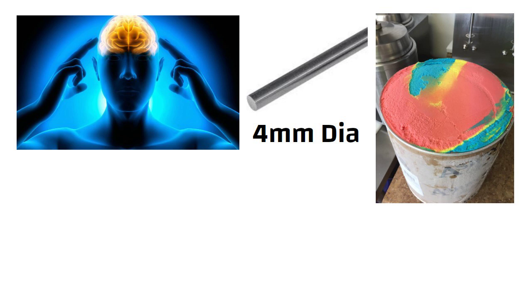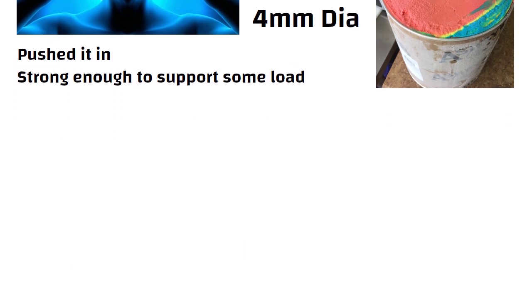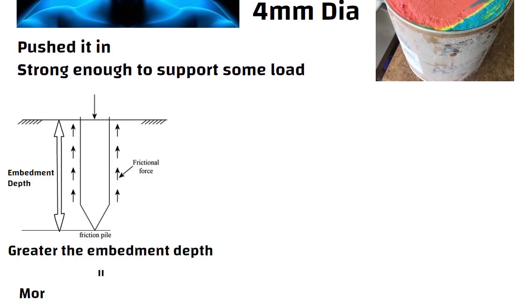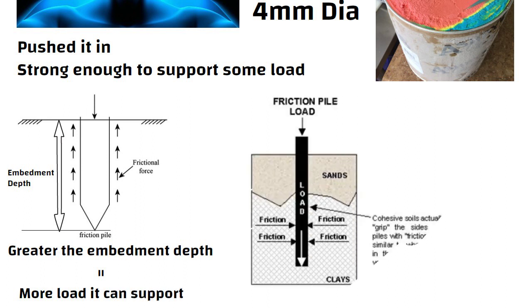To visualize how this works, imagine you are pushing a solid metal rod of say 4 mm diameter into a tub of frozen ice cream. Once you have pushed it in, it is strong enough to support some load. The greater the embedment depth in the ice cream, the more load it can support. This is very similar to how a friction pile works.